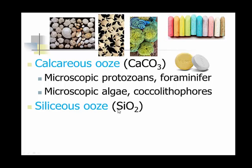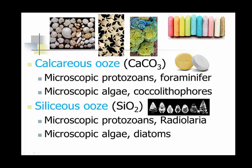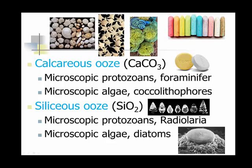We also have what are called siliceous oozes, made out of silicon dioxide. There are critters that make their shells out of calcium carbonate, and there are critters that make them out of silicon dioxide. These are called protozoans, and radiolarians are very similar. We also have microscopic algae, and we have diatoms. Diatoms are small pill-like creatures — these would be zooplankton because they are animals.